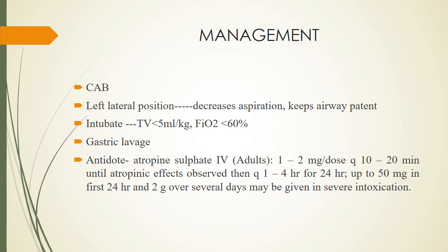Management: monitor circulation, airway, and breathing. Provide the left lateral position to the patient. If required, intubation is performed with tidal volume less than 5 ml per kg body weight and fraction of inspired oxygen at or less than 60%. Perform gastric lavage. If the patient is admitted within 4 hours of ingestion, activated charcoal can be given. The antidote for organophosphate poisoning is atropine sulfate — initially 1 to 2 mg every 10 to 20 minutes until effect is observed, then every 4 to 24 hours. Dose may range from 50 mg up to 2 grams depending on the quantity of poison ingested.